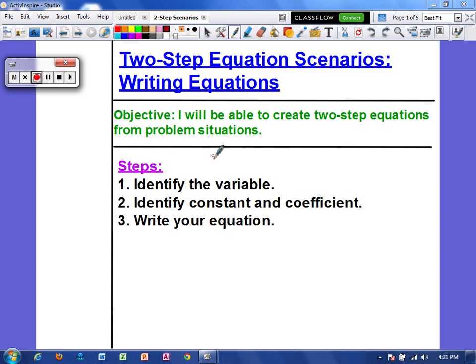So here are the steps to creating an equation from a word problem. First you want to identify the variable, then we want to identify the constant and the coefficient, and then we're going to write the equation.